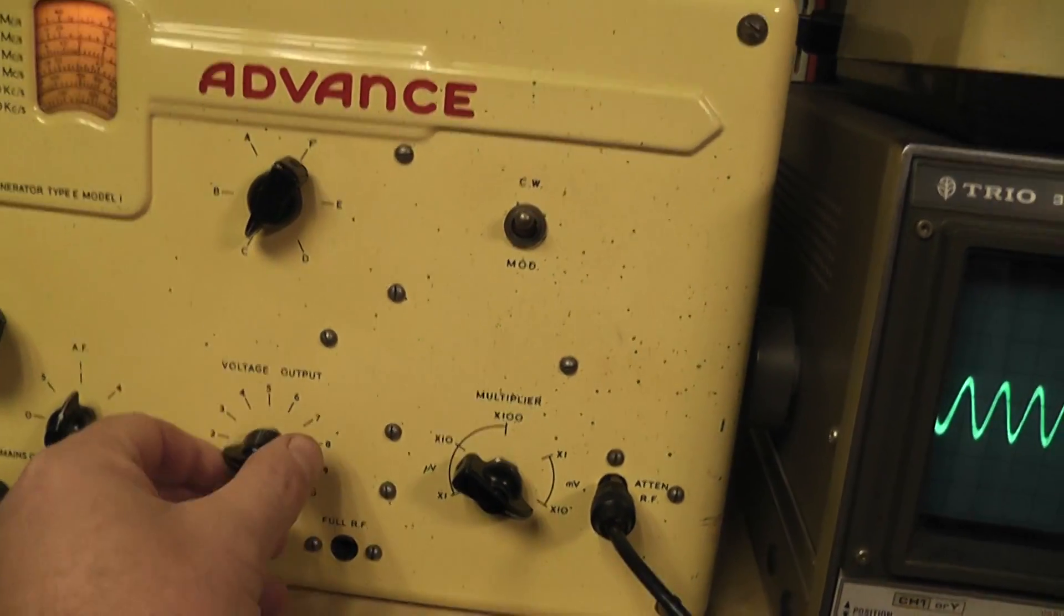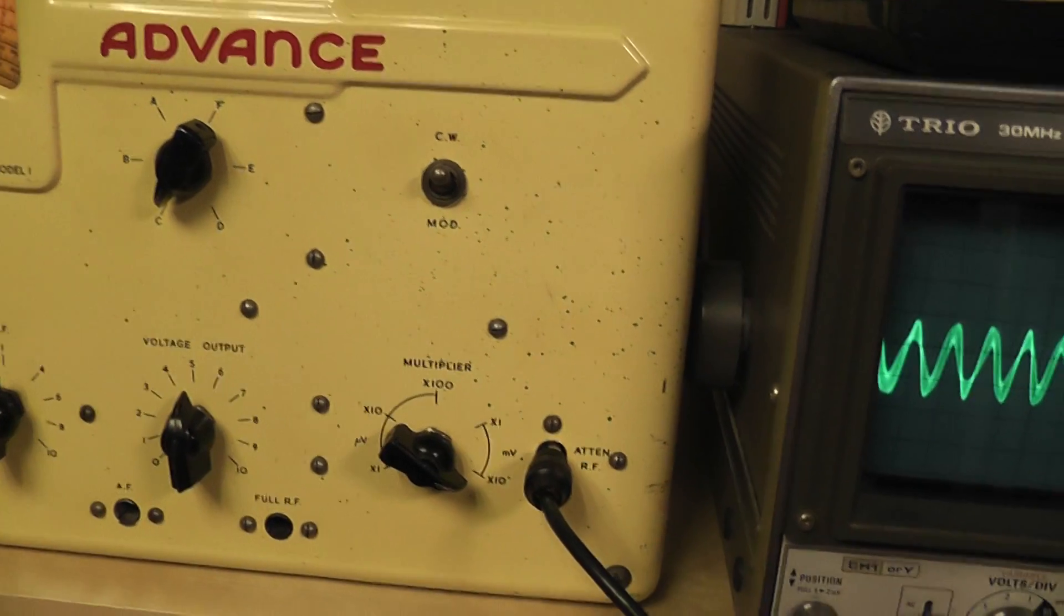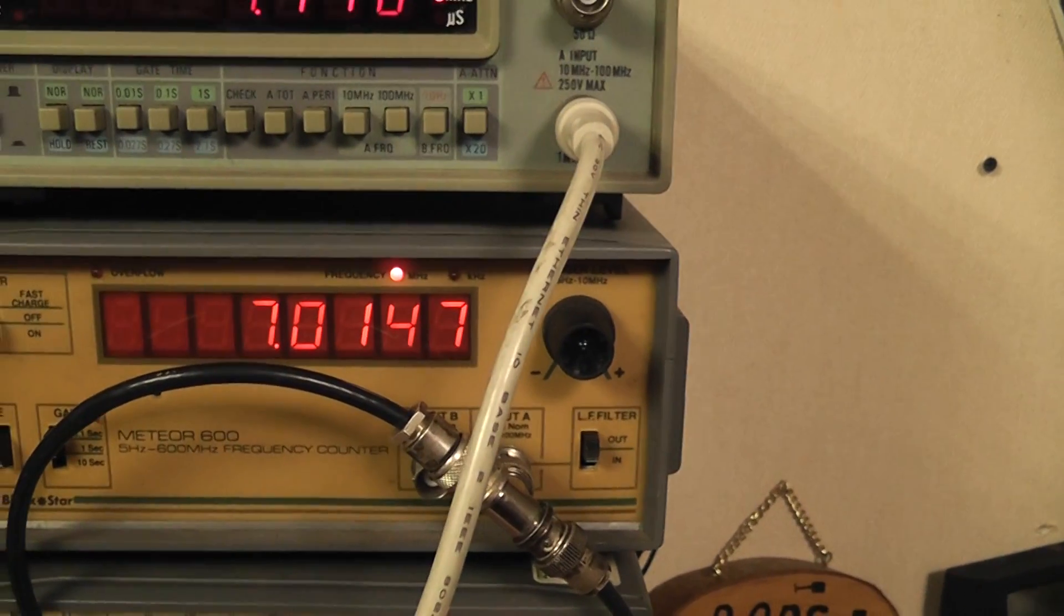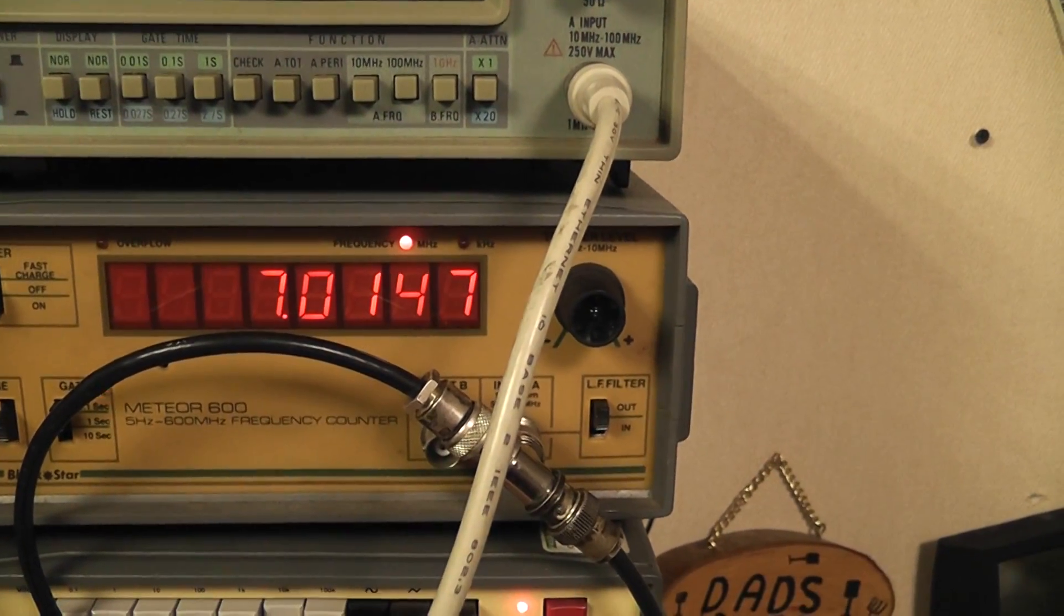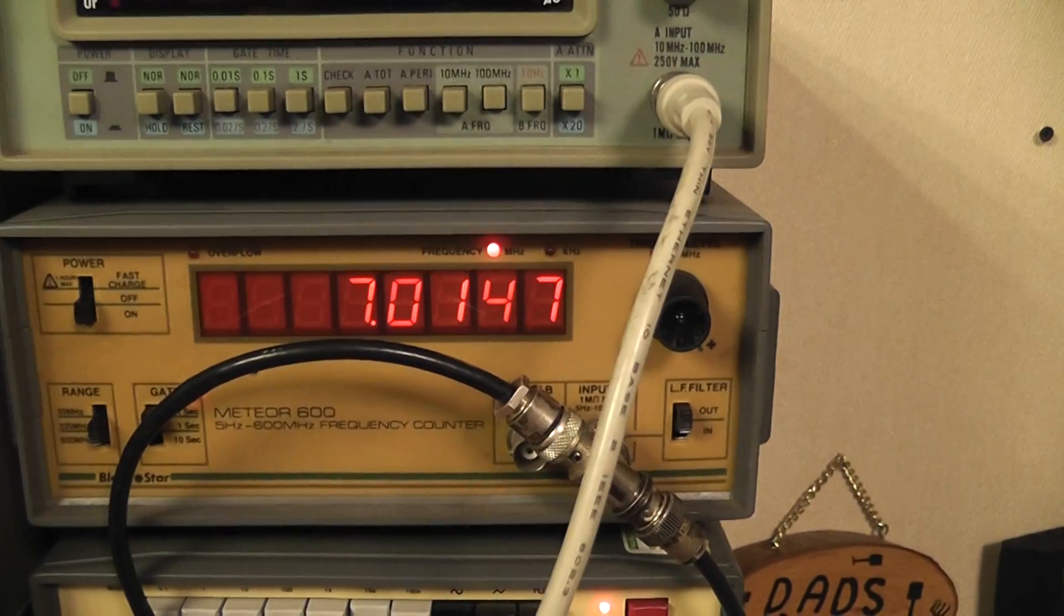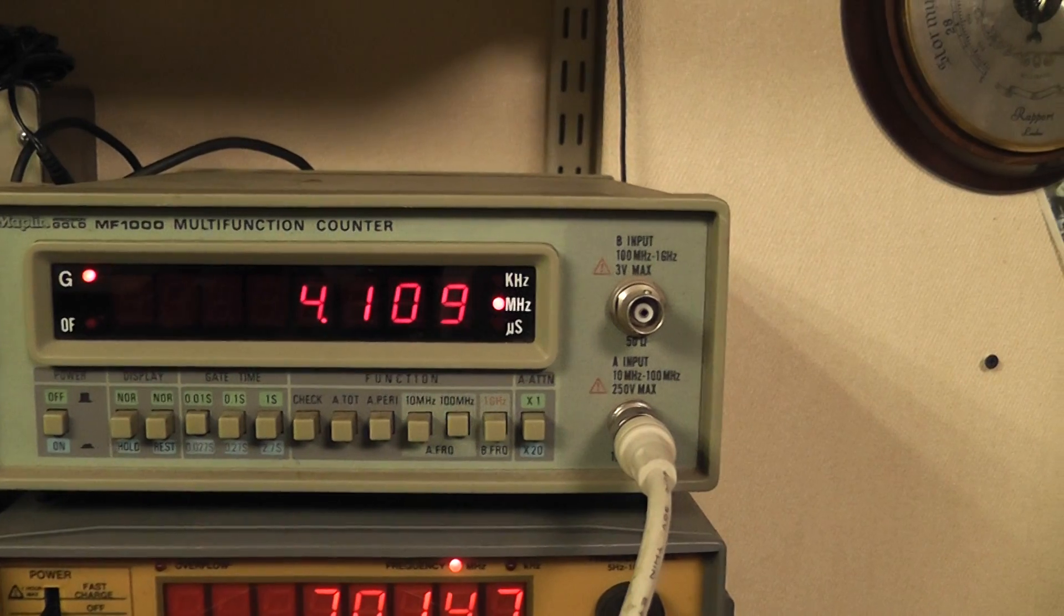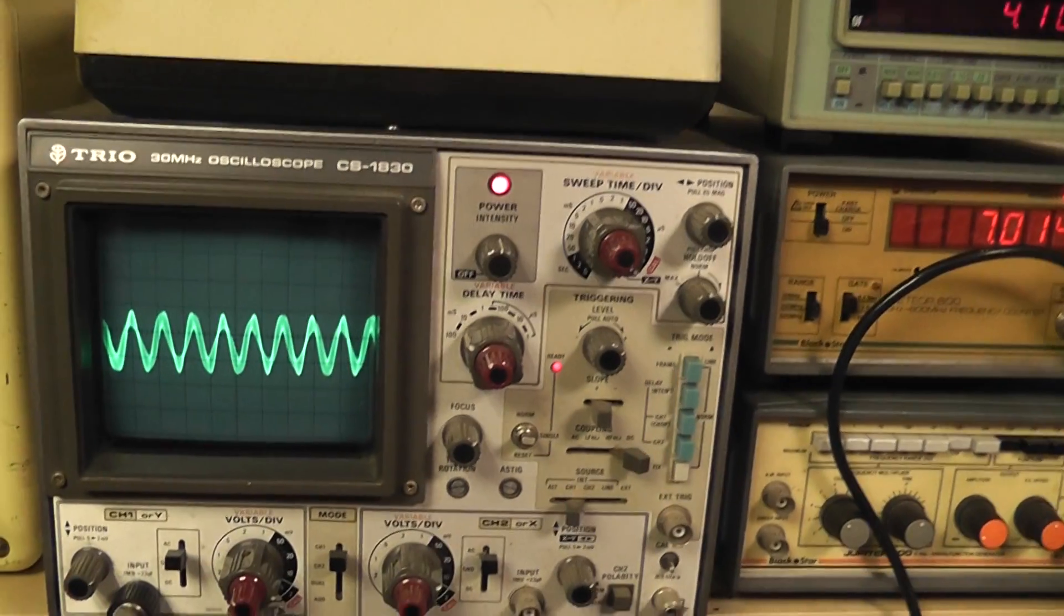Give it some volts, and we have what is effectively 7 Megs going into the other side of the mixer. So 7 Megs coming in RF in, the local oscillator running at 4 Megs, and this is the trace that I'm getting.